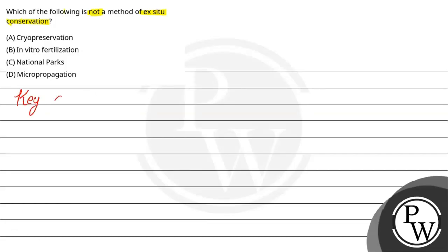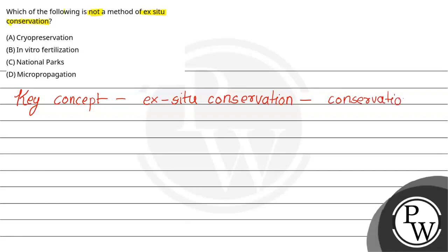The key concept for this question is Ex-situ conservation. Ex-situ means taking an organism out of its natural habitat to save it in the safest place — conservation of species outside their natural habitat. This is called Ex-situ conservation.